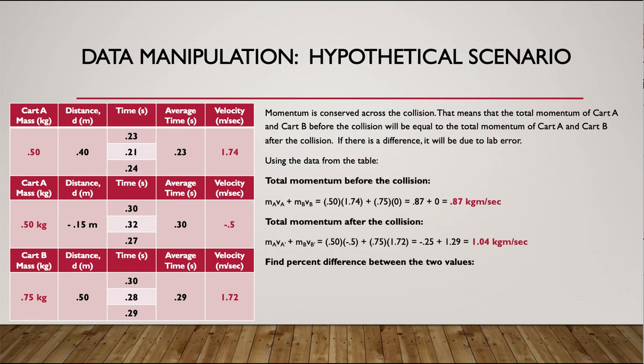The last part of each set is to find the percent difference between the two values. They give us the equation. It's basically the difference in the two values divided by the average of the two values multiplied by 100. So you plug in, these numbers are going to come from over here. 0.87 was my first value. 1.04 is my second.